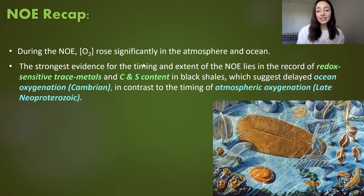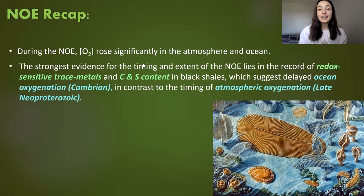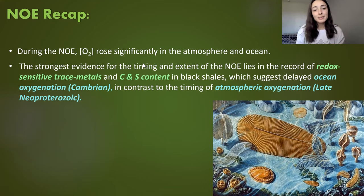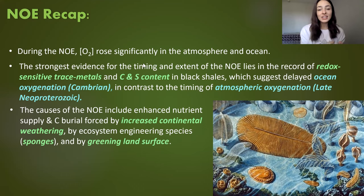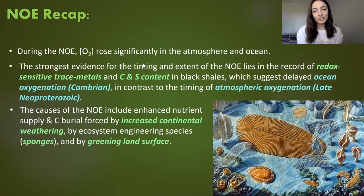The black shale record suggests a late Neoproterozoic rise in atmospheric oxygen but delayed ocean oxygenation until the Paleozoic. In this video, it gets a little controversial in terms of which period the ocean actually became fully oxygenated to modern levels. We also went over the causes of the NOE, which included increased continental weathering that caused enhanced nutrient supply and carbon burial, creating an oxygen source to the atmosphere.